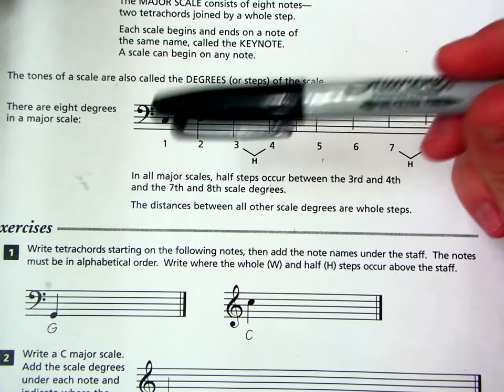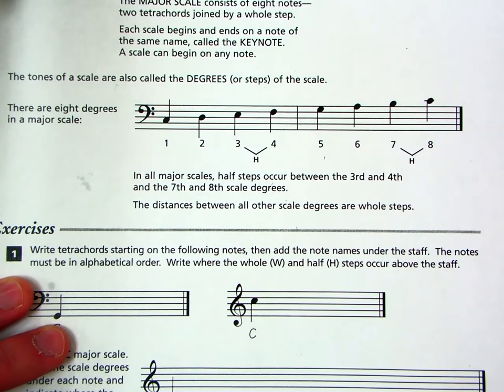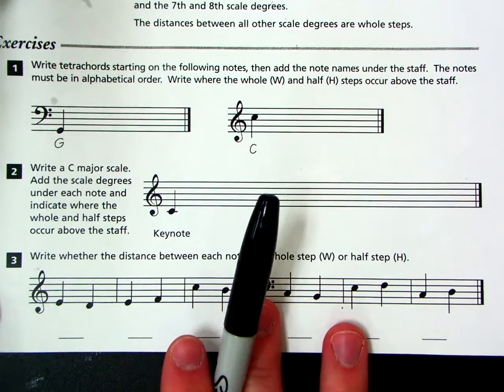And then the last part here, before we get into some of the assignments. In all major scales, half steps occur between the third and fourth, and the seventh and eighth scale degrees. So you can see it here. Between three and four, E to F is a half step, and then B to C is also a half step. And everything else on the scale is a whole step.